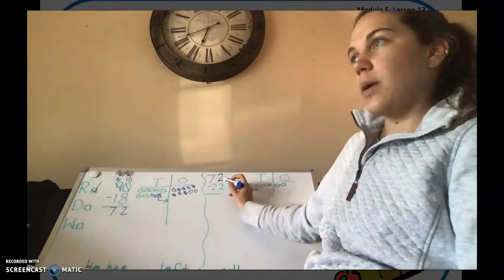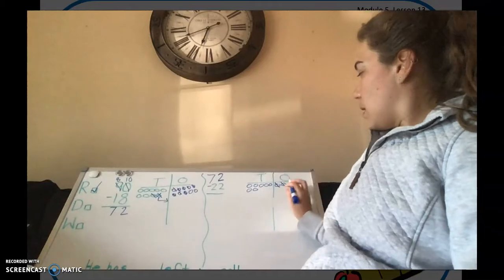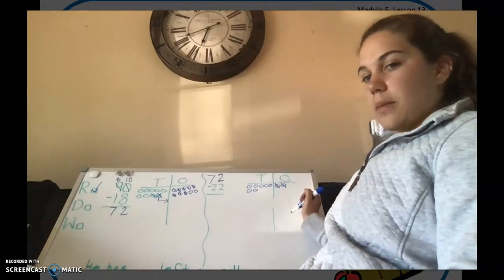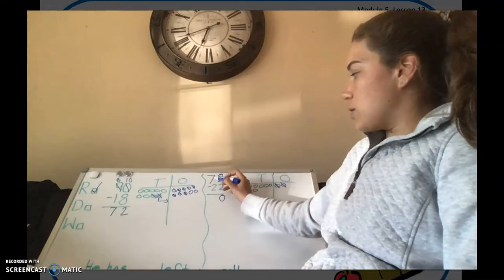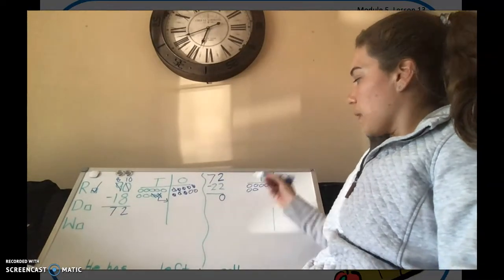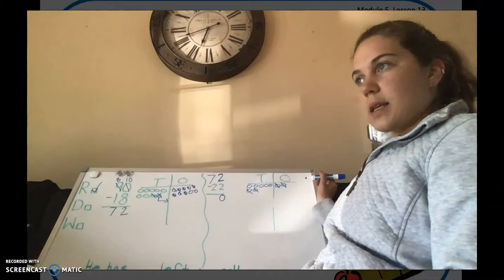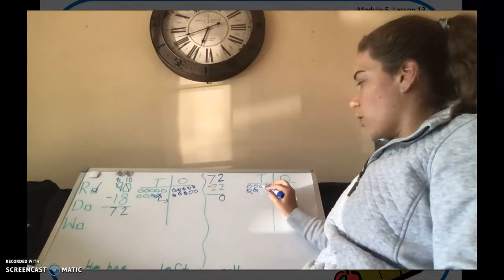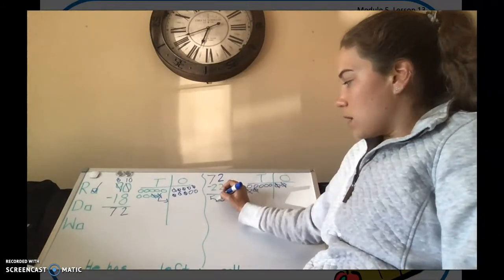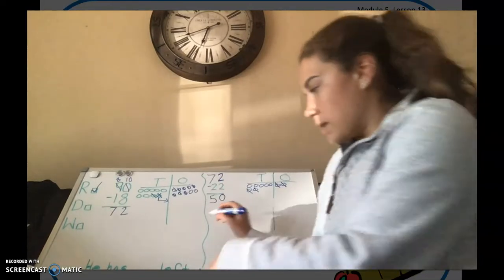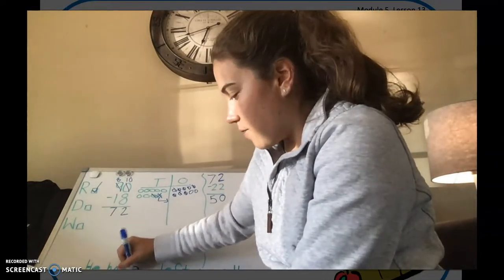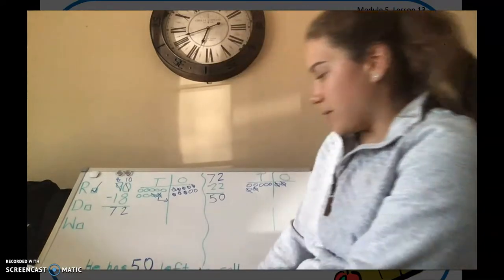So we start in our ones column and do 2 minus 2. How many left in our ones column? Good, 0. Now we're going to do 7 minus 2. So we're going to cross off 2 in our tens column. And how many are left? 1, 2, 3, 4, 5. So there are 50 apples left at the end of Monday. So he has 50 left to sell.